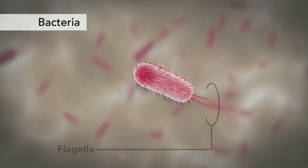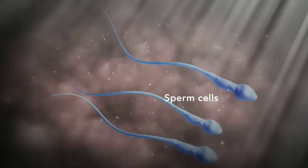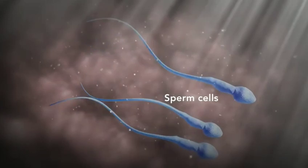Another unique feature in some cells is flagella. Some bacteria have flagella. A flagellum is like a little tail that can help a cell move or propel itself. The only human cell that has a flagellum is a sperm cell.